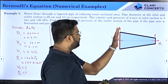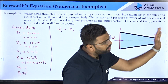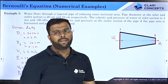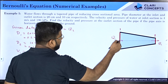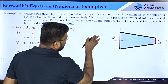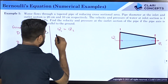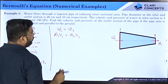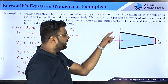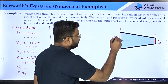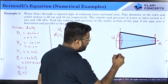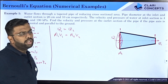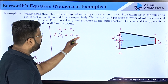If 5 liters of water enters the section in 1 second, then 5 liters should also leave in 1 second because the volume of water inside the pipe must remain constant. Q1 equals A1 V1 and Q2 equals A2 V2. The circular cross-sectional area A1 times normal velocity V1 gives flow rate Q1, and A2 V2 gives Q2.